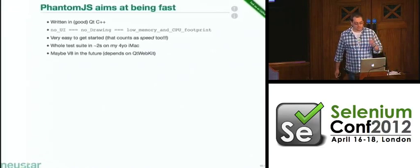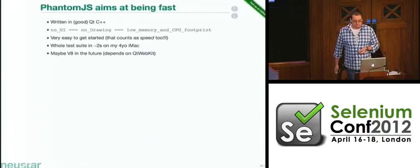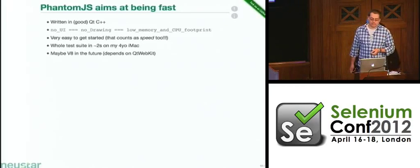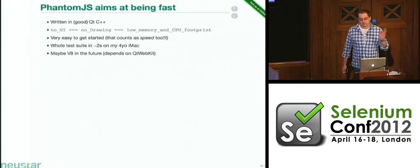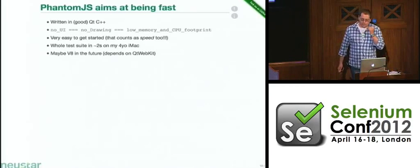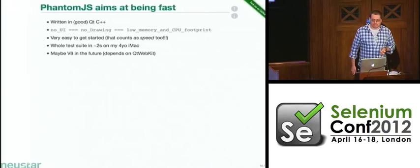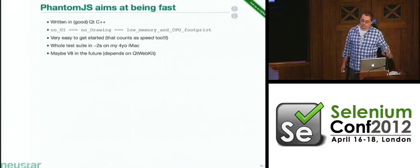Our web test suite runs in something like two seconds on my old iMac — pretty good performance. In the future we might move to V8 instead of the current JavaScript core, which uses SpiderMonkey, the default in WebKit. V8 is recognized by almost everyone as faster, so when Qt WebKit moves to V8, we will automatically move to V8 as well.